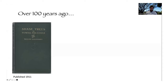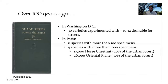Let's start by looking at an old book — 'Shade Trees in Towns and Cities' by William Solotaroff — which outlined some of the first studies of urban trees. He looked at Washington DC around 1911, where 30 varieties were experimented with but only 10 to 12 were really desirable for streets. In Paris, there were 11 species with more than 100 specimens and nine with more than 1,000, with 17,000 horse chestnuts and 26,000 Oriental plane trees making up 50% of the urban forest.